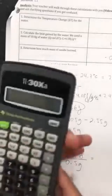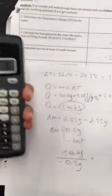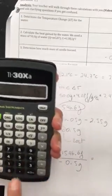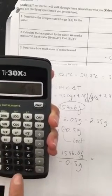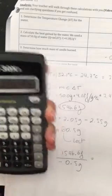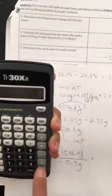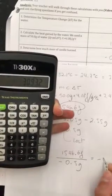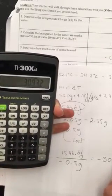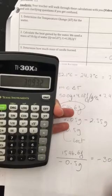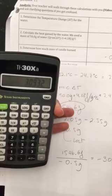So all you do is you take your calculator, 1546.6 divided by 0.5 which is -3093.2, and that's joules per gram. So this number goes in here.